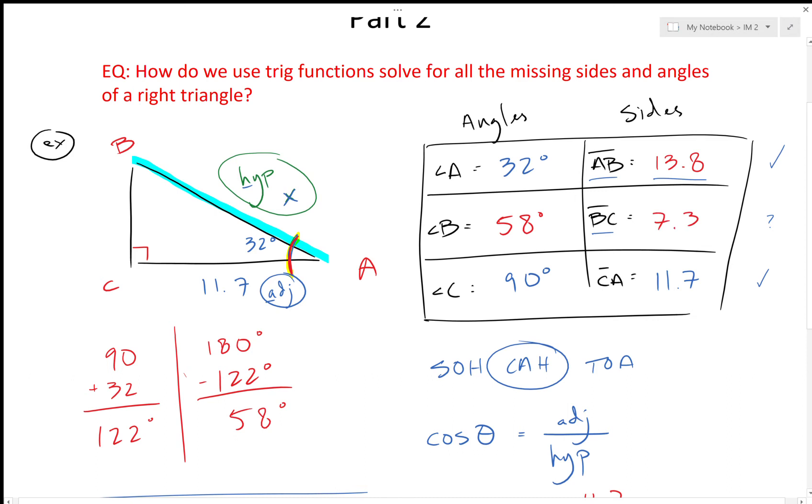Now sometimes the letter says A, sometimes the letters say X, but just remember the thing that you're finding in this case right now is BC. So side BC is 7.3. Now you can leave it in the table, and that's fine if you want to write it back on the triangle to see if they make sense: 11.7, 13.8, 7.3—these are all in the same neighborhood, so everything looks okay.